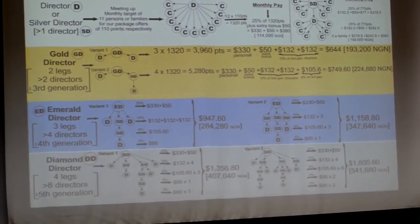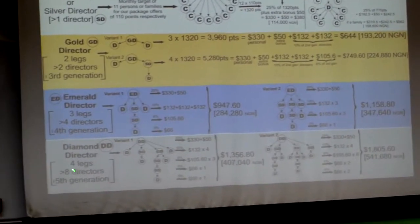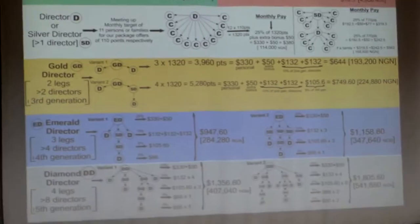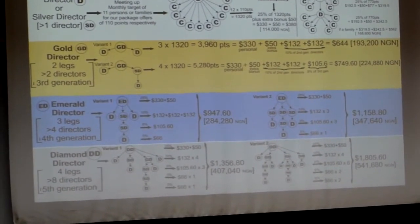Now, the diamond director, now you have complete legs. Working hard and reaching out to people. So, we consider you have four legs. You have minimum of eight directors till the fifth generation. Again, there are different variants on how to reach out to people.